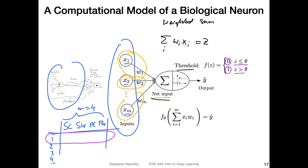To be more precise: if z is smaller or equal to the threshold we return class label zero, and if z is greater than the threshold we return class label one. When using floating point numbers, the chance that something is exactly equal is very small, so whether we use smaller-than or smaller-equal-to doesn't really matter either way. The output — either zero or one — is our class label y-hat.